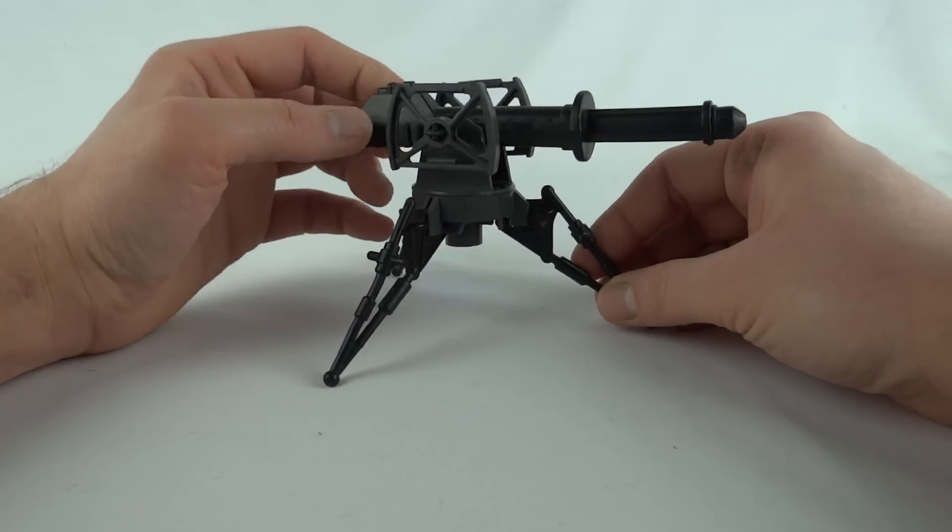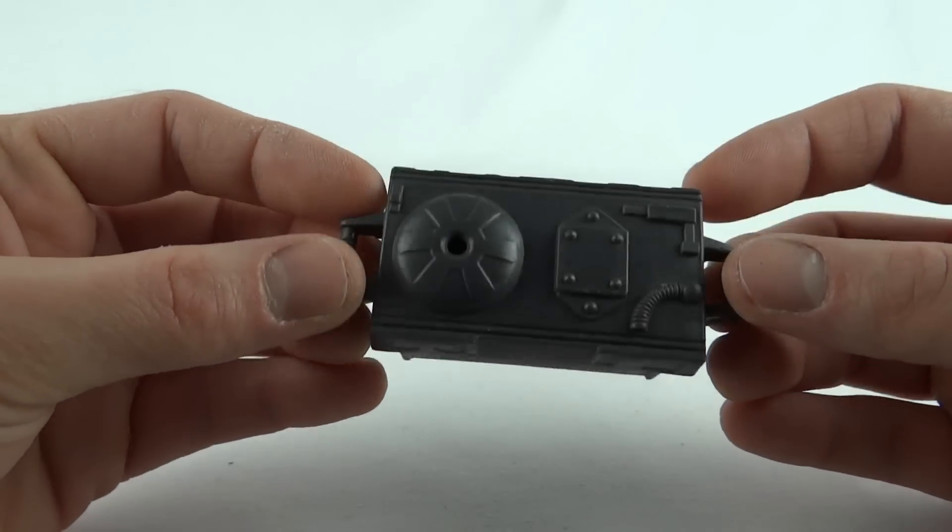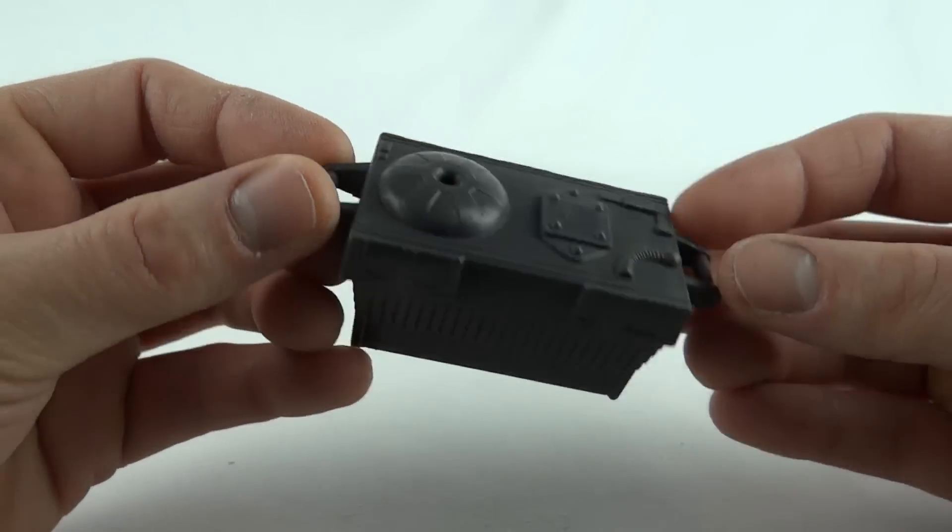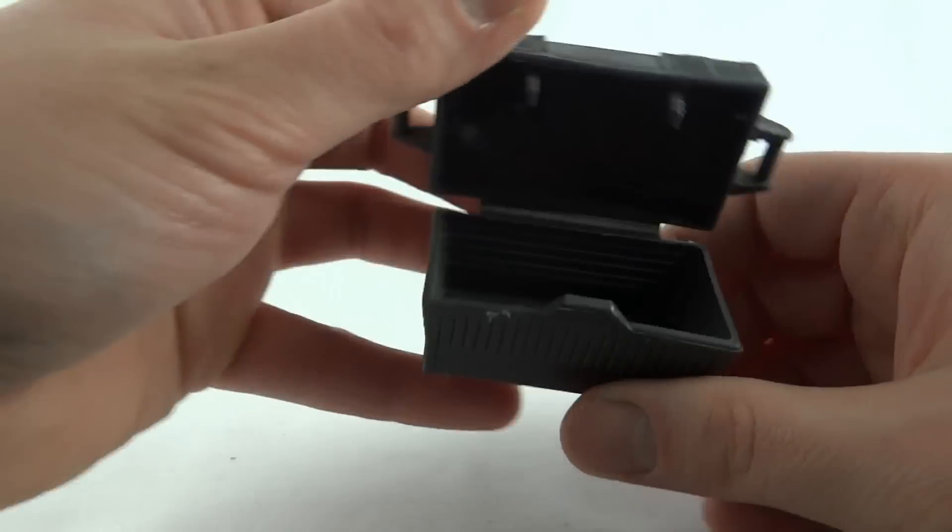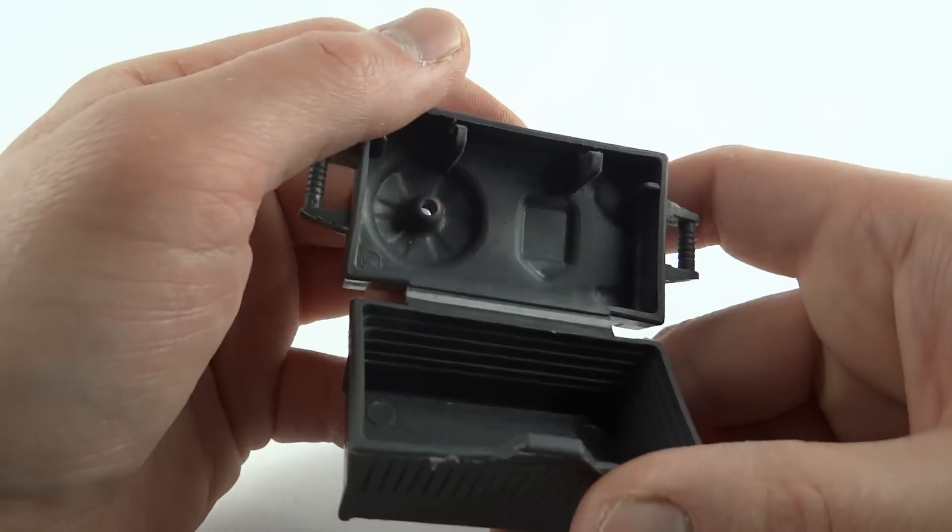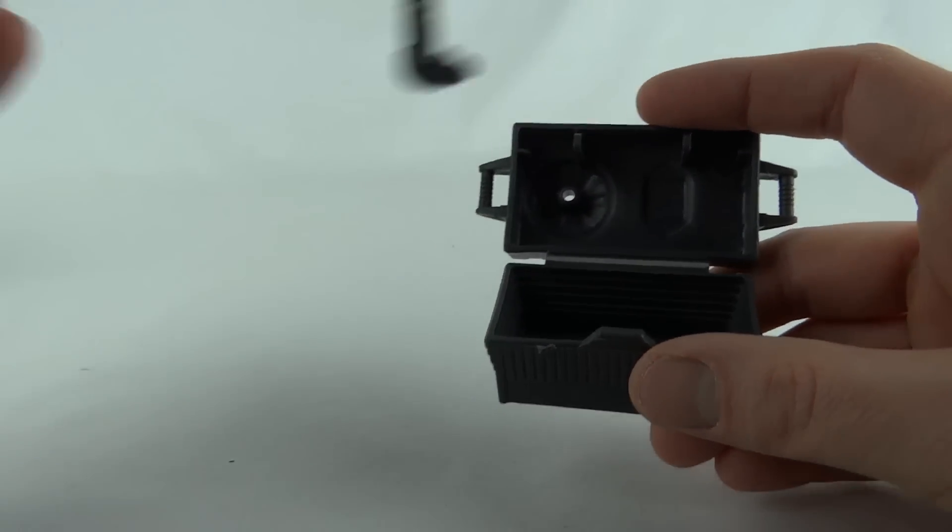So this is the energizer unit and you can see some nice little more detail on there. This pops open, you've got a little case inside there, and you can store your power hose in there, just going to coil it up a bit.